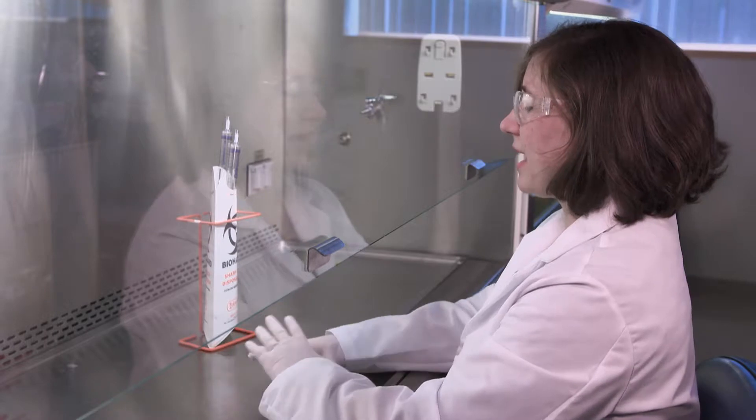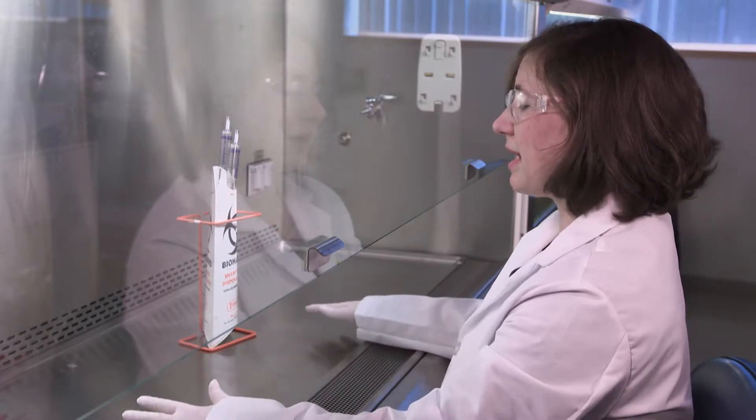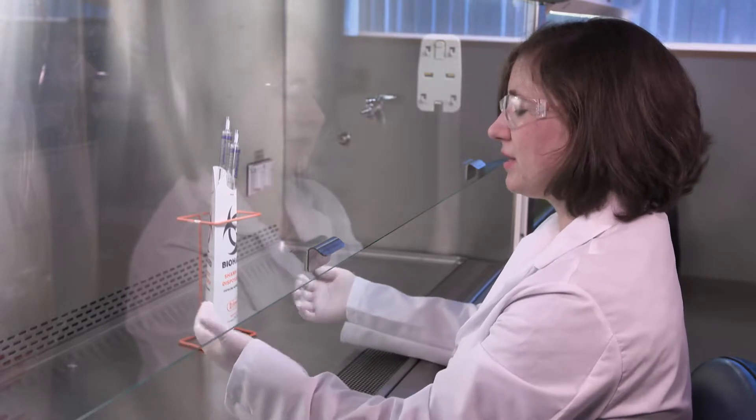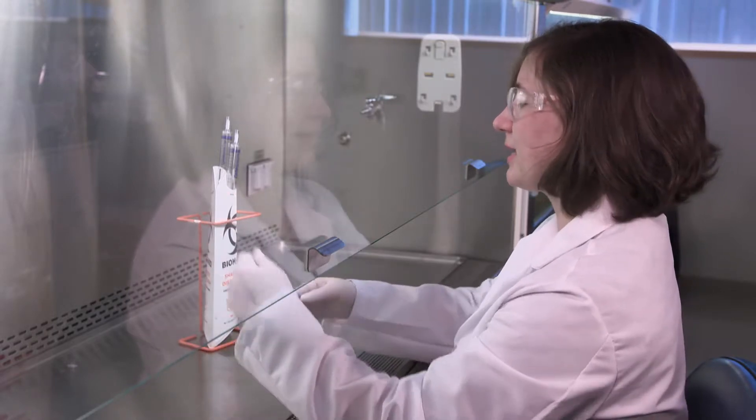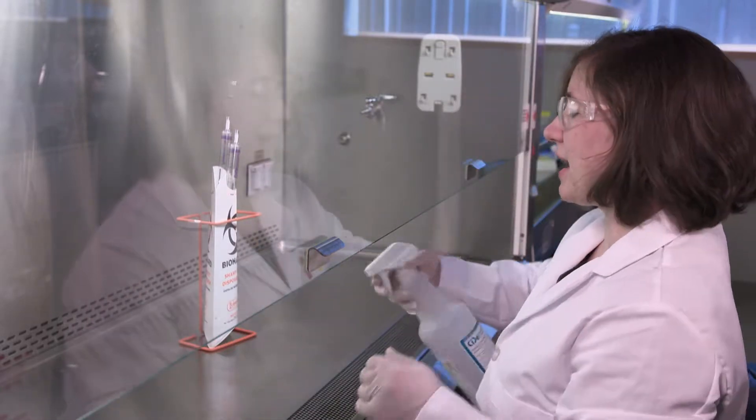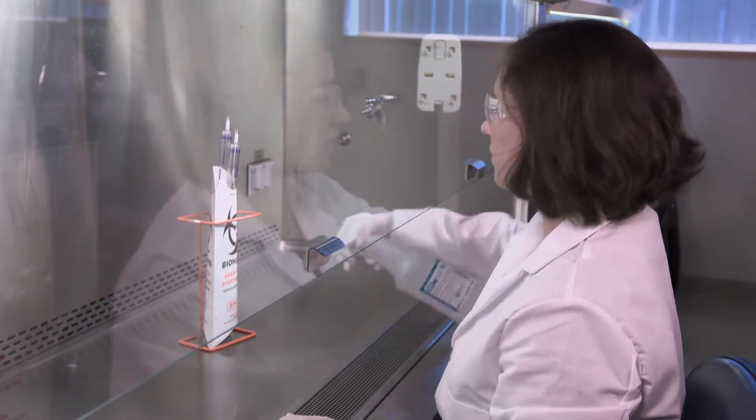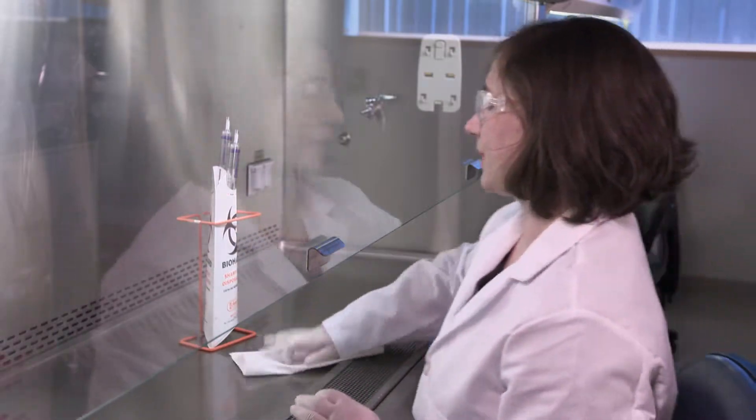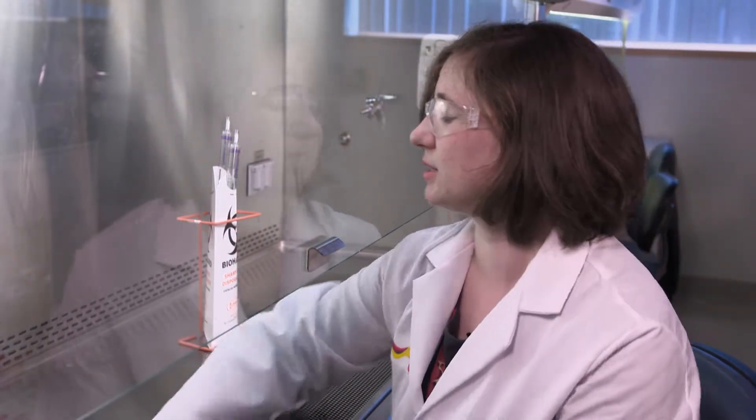Proper aseptic technique involves having a clean biosafety cabinet and proper PPE donned before entering the biosafety cabinet, which includes gloves, lab jacket, and glasses. Then, upon entering the biosafety cabinet, you will clean with IPA solution and wipe the surface until dry.